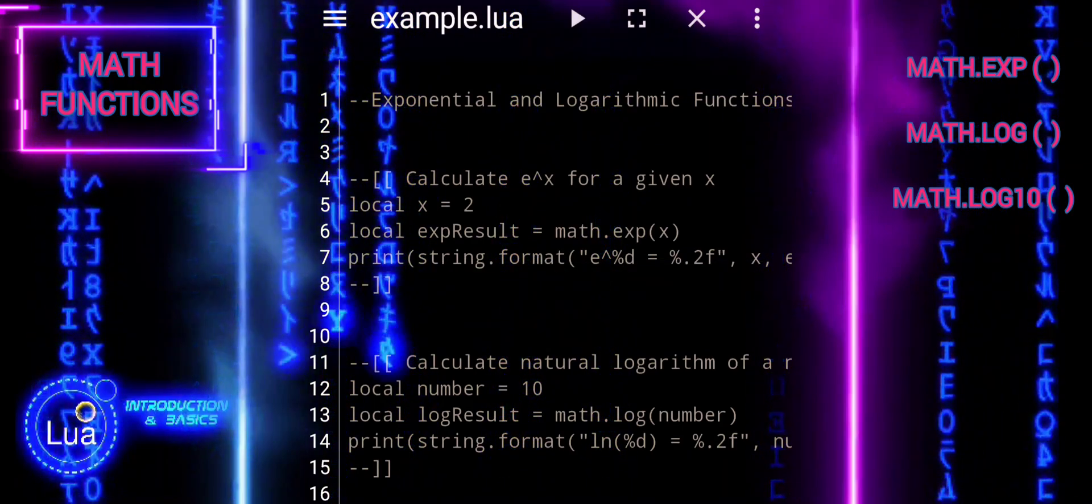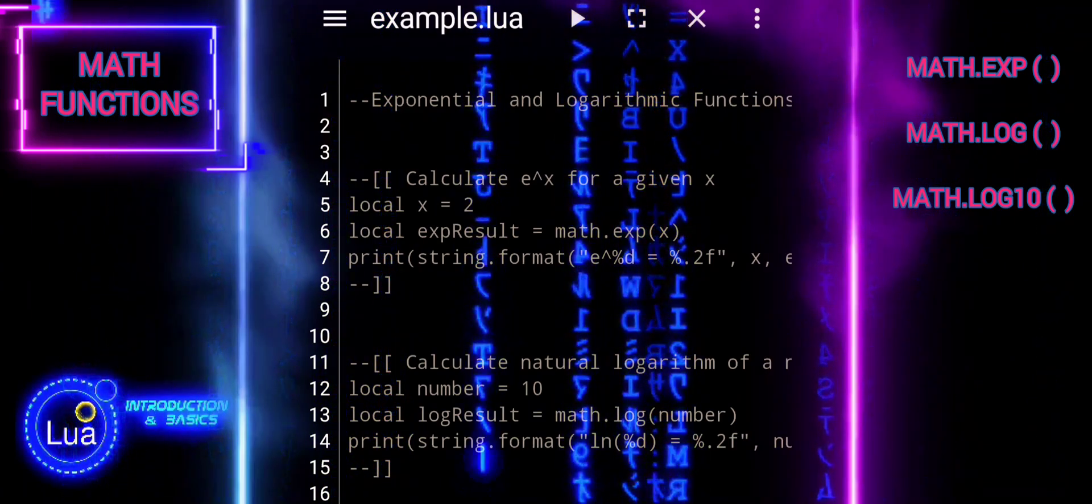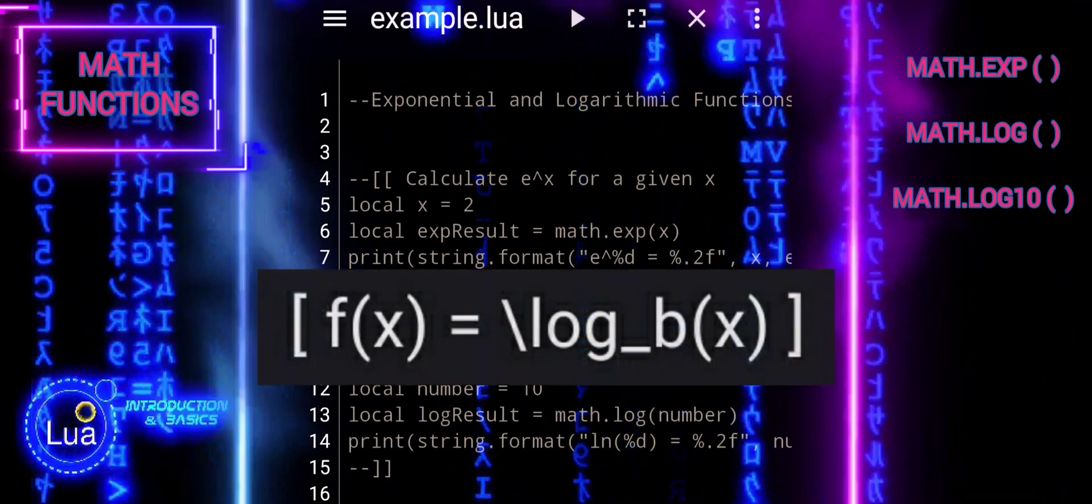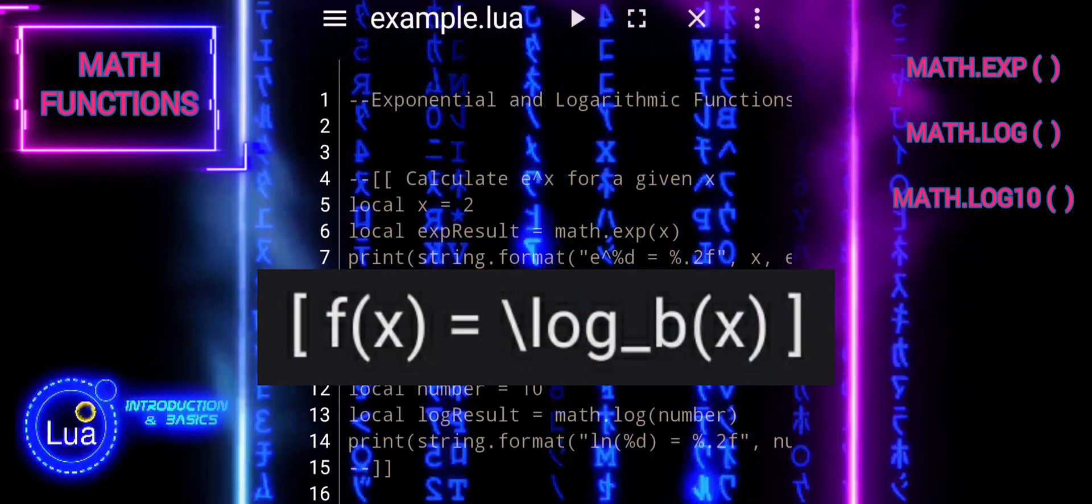A logarithmic function is the inverse of an exponential function. It is written in the form log_b(x), where b is the base of the logarithm and x is the argument of the logarithm.